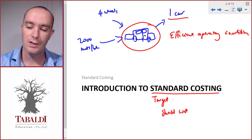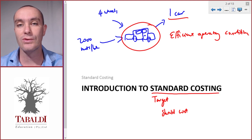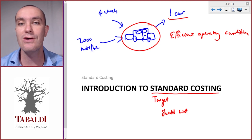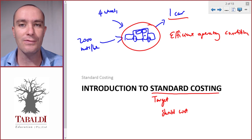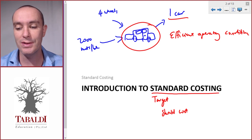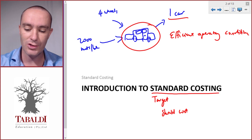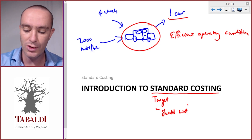Efficient operating conditions means the operations run smoothly as they are supposed to, with no unforeseen circumstances like a power shortage or anything unexpected. Under efficient operating conditions, the target cost — or standard cost — is how much it should cost us to make one car.